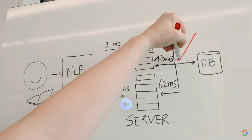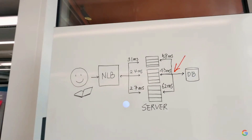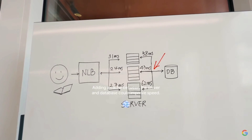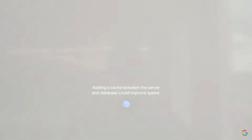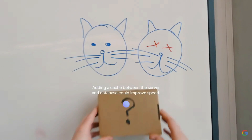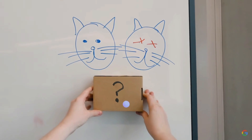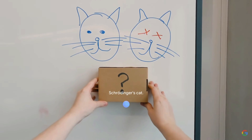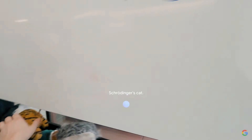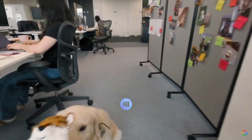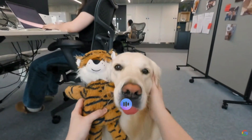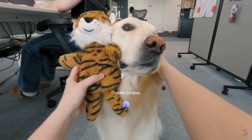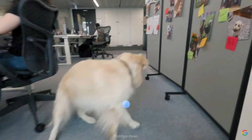The user shows a system architecture diagram and asks what could make it faster. The AI suggests adding a cache between the server and database to improve speed. When shown a cat and tiger together, the AI recognizes it as 'your cat.' Finally, asked for a band name for the duo, it suggests 'Golden Stripes.' The user thanks Gemini.